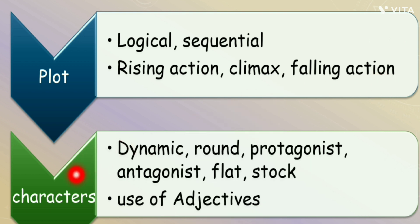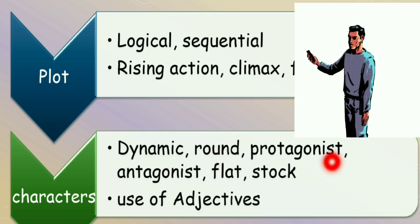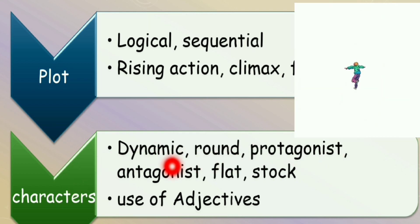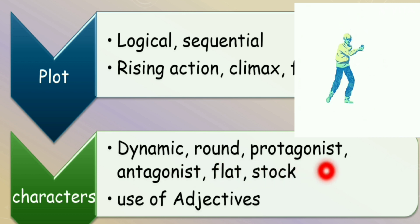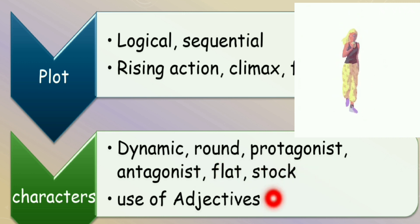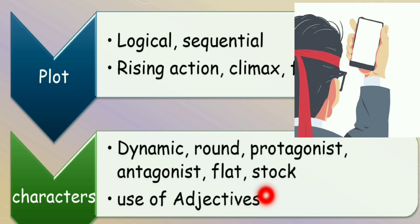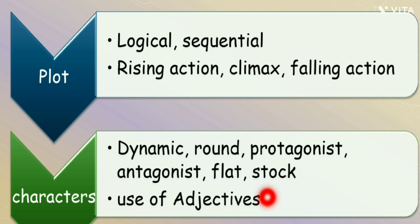Then come the characters. A good story has all kinds of characters: dynamic, round, protagonist, antagonist, flat, and stock characters. To describe these characters, we should use a lot of good adjectives.